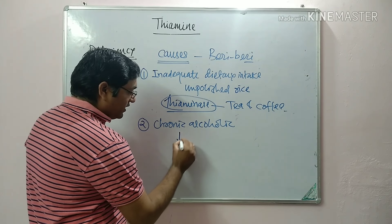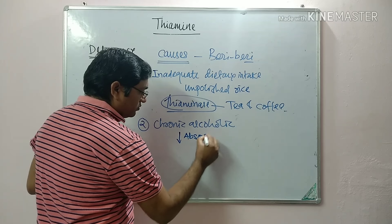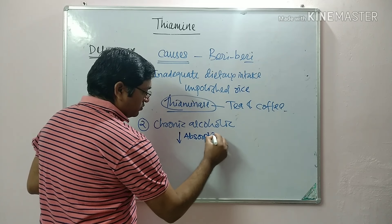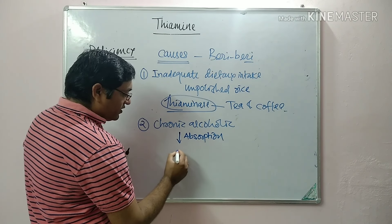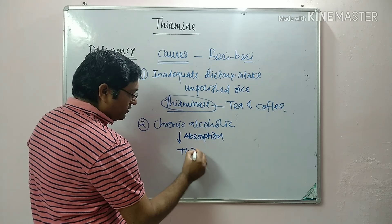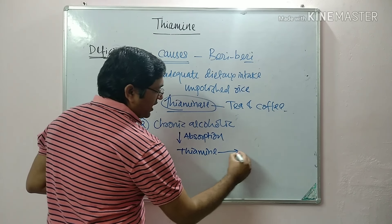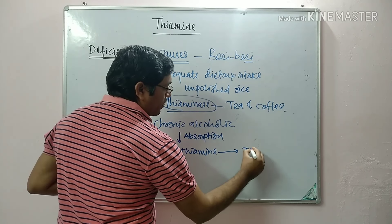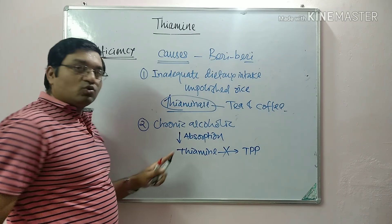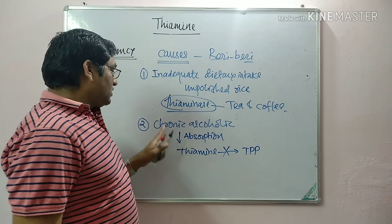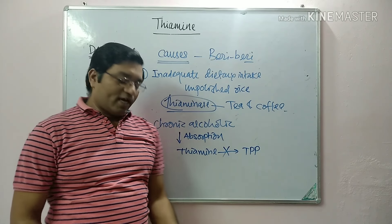In chronic alcoholism there are two reasons for thiamine deficiency: the first is decreased absorption of thiamine, and the second is interference with the conversion of thiamine to Thiamine Pyrophosphate. Because of these two reasons, chronic alcoholics have deficiency of thiamine.